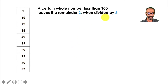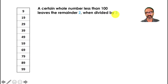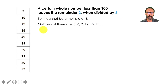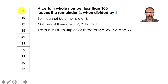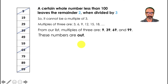Now the third condition: a certain whole number less than 100 leaves a remainder of 2 when divided by 3. That means it's not a multiple of 3 — all multiples of 3 are out. Multiples of 3 include 3, 6, 9, 12, 15, 18, and so on. From our remaining list — numbers ending in 9 — the ones that are multiples of 3 are: 9, 39, 69, and 99. Those are out.